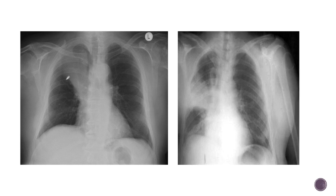In this next image, we can see similar opacity in the right upper zone, but there is shifting of the right horizontal fissure upwards. The horizontal fissure is supposed to lie horizontally, extending from the hilum towards the right lateral thoracic wall, but in this case it is shifted upwards. So this is a case of right upper lobe collapse. We also don't see any air bronchograms in the collapsed right upper lobe.